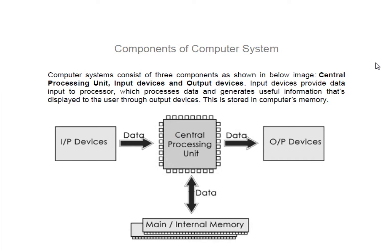Hello students, welcome to my class on computer subjects for class 9th. Today we'll understand the components of the computer system. As you can see in this figure, there are three important main components of the computer: input device, output device, and central processing unit. There is also main memory, also known as internal memory, which plays an important role while processing work in a computer. We will understand them one by one.